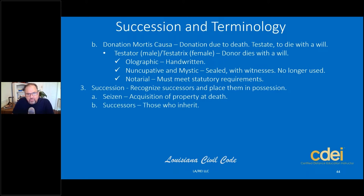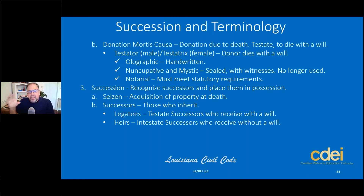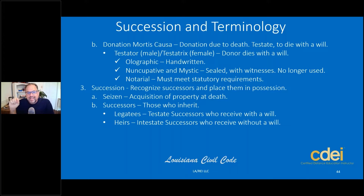Who are the successors? They're the ones who inherit the property. In Louisiana, there are two types. Legatees — someone who dies testate, with a will; they're named in the will and called legatees. If someone dies intestate, without a will, they're called heirs. The state of Louisiana will descend and distribute according to law to the heirs. So: legatees is with a will (testate), heirs is without a will (intestate).